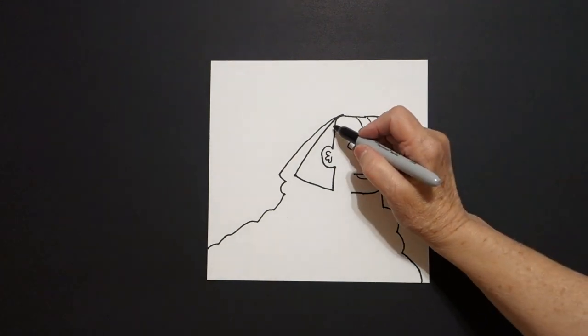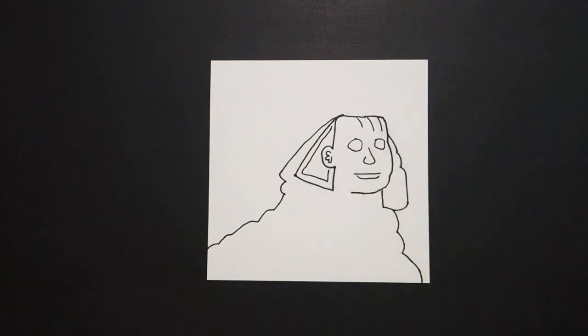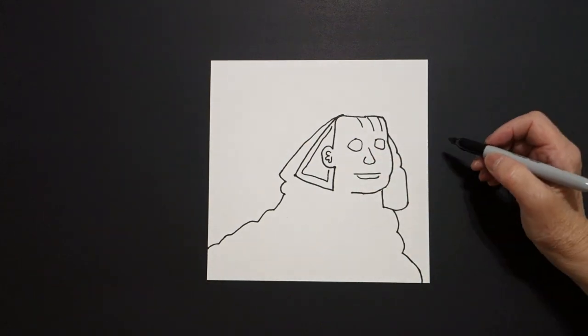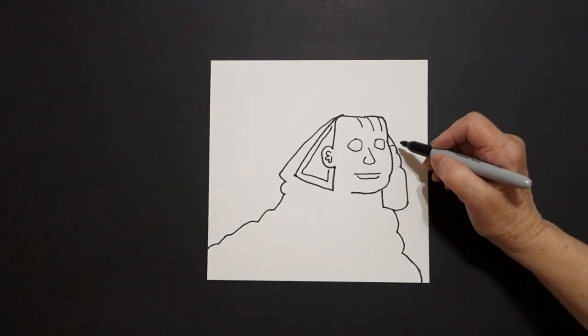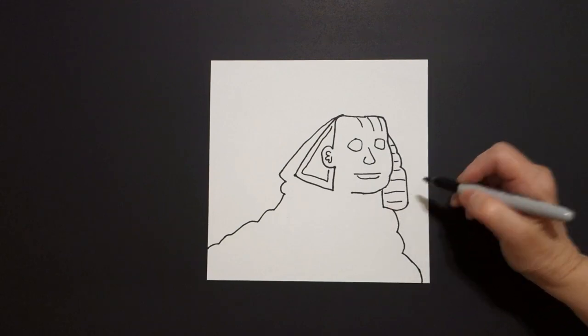We're going to mimic this over here, this straight diagonal, straight line, straight line up, leave it floating. Come over on the right and we're just going to draw straight lines across.